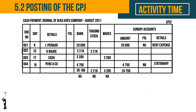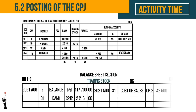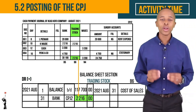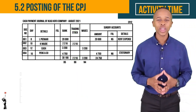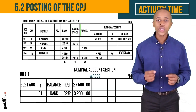Next, let's look at trading stock. Trading stock is a current asset and increases on the debit side. It is a column total, so you'll post the total at the end of the month. Trading stock is debited because it is an asset that increases.